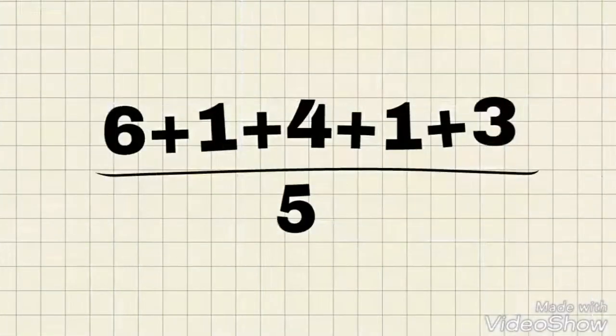Going back to our problem, it's gonna be 6 plus 1 plus 4 plus 1 plus 3 divided by the number of data points we have, which is 5. And we get 6 plus 1 equals 7,